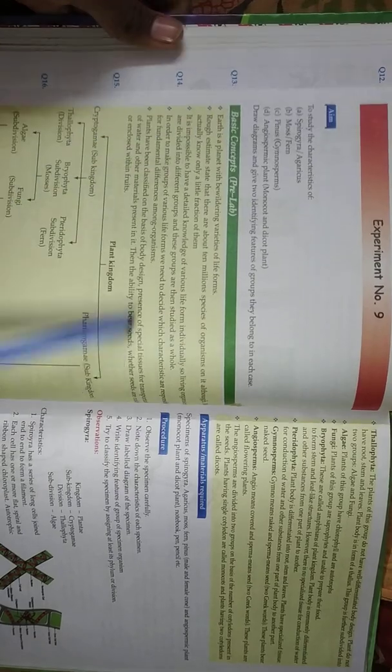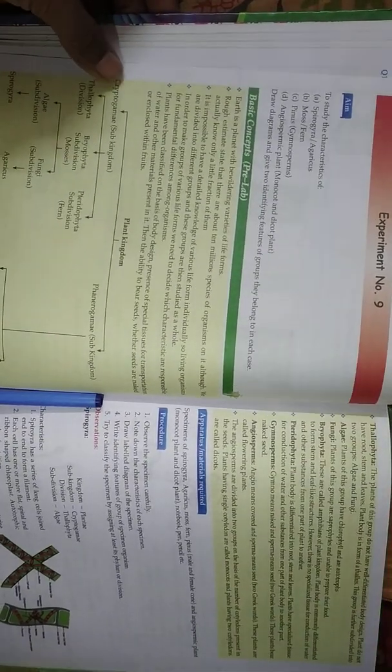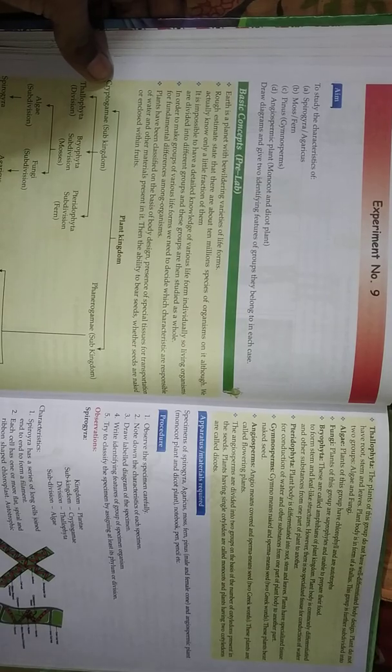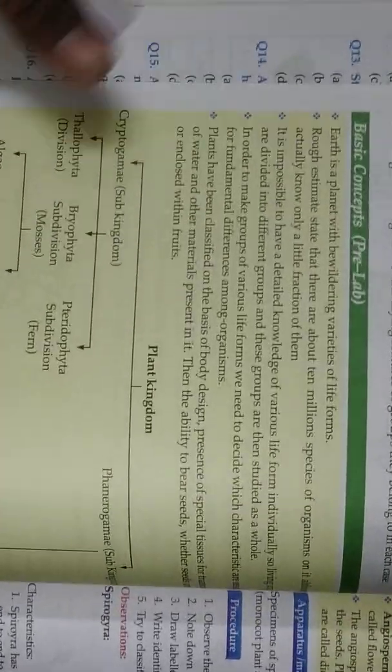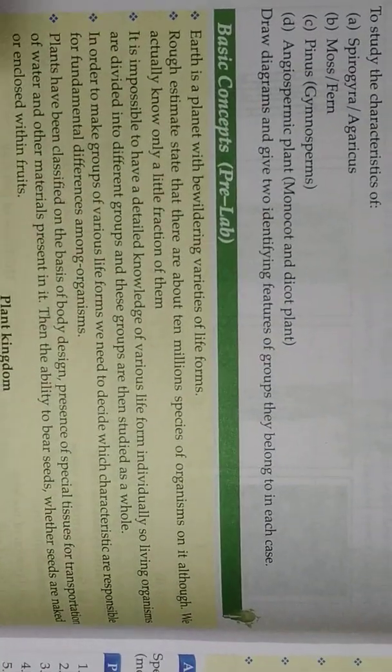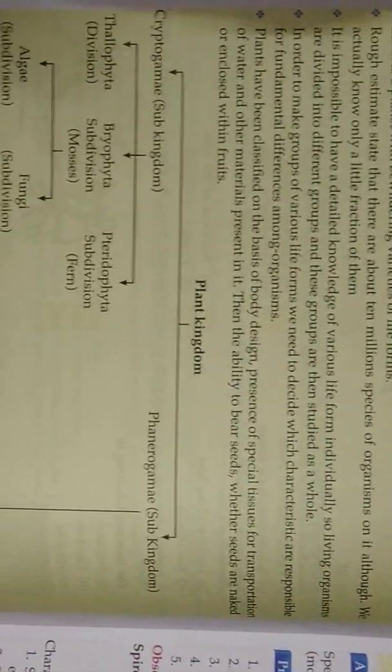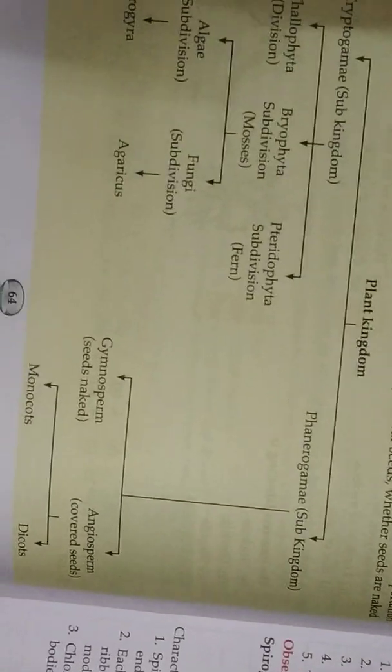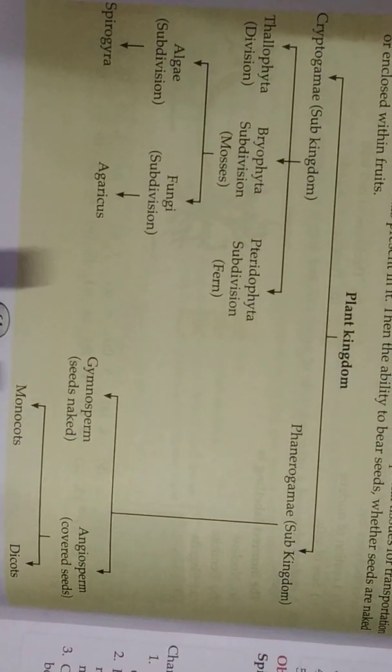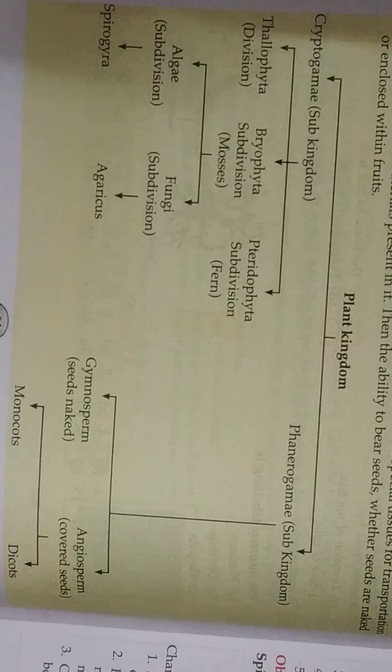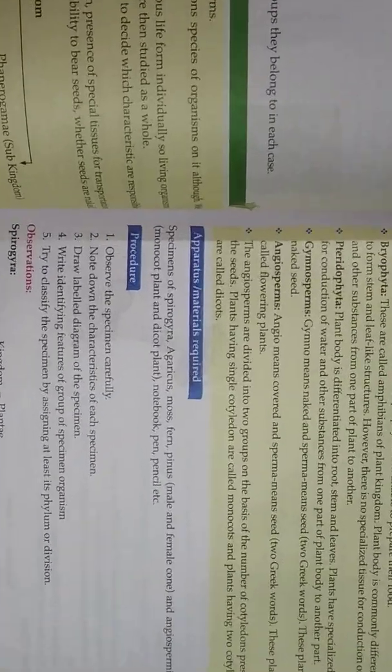And then next experiment: to study the characteristics of spirogera, moss, fern, pines, angiosperm plant, monocot and dicot plant. The diagrams of spirogera and plant kingdom, you see this.